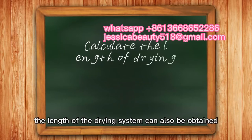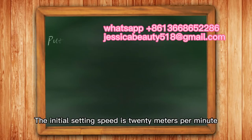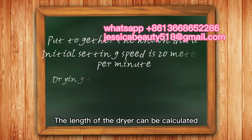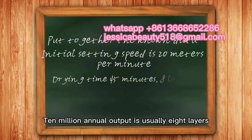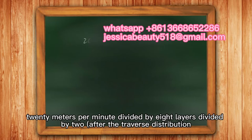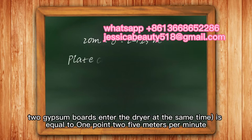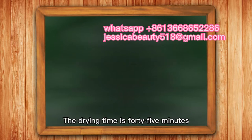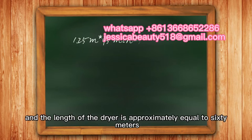Through the same calculation, the length of the drying system can also be determined. The initial setting speed is 20 meters per minute, and the drying time required for gypsum board is 45 minutes. For a 10 million annual output, the dryer typically uses 8 layers. The dryer speed is calculated as: 20 meters per minute divided by 8 layers, divided by 2 (since two gypsum boards enter the dryer simultaneously after traverse distribution), which equals 1.25 meters per minute. At 1.25 meters per minute for 45 minutes, the length of the dryer is approximately 60 meters.